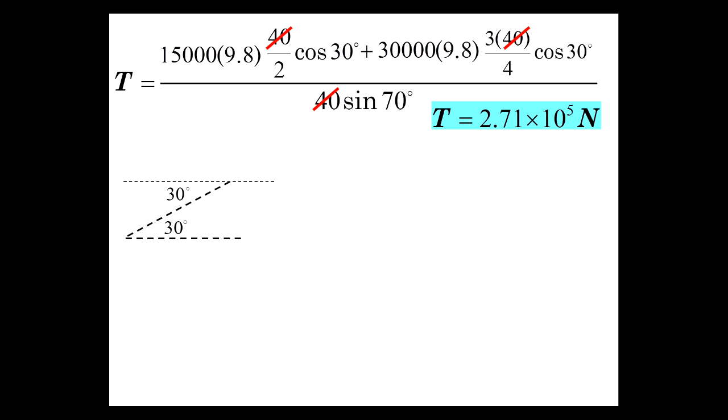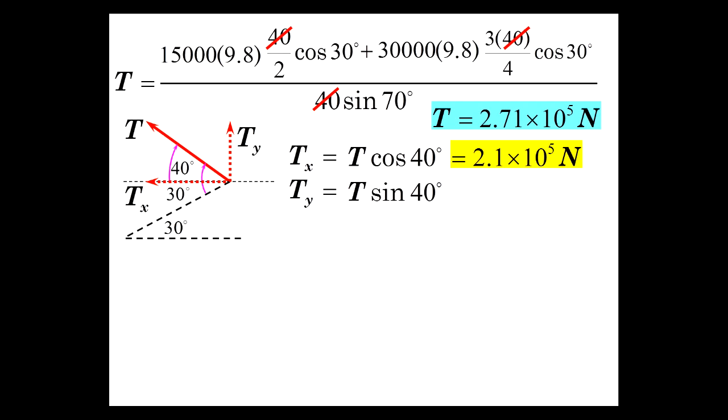And now, for the force. So, looking at the geometry here, we have 40 degrees from horizontal is the direction of the tension. So we can break this up into its components. X component, Y component. So there it is. Tension in the X, T cosine of 40, 2.1 times 10 to the 5th newtons. Tension Y, T sine of 40, 1.74 times 10 to the 5th.